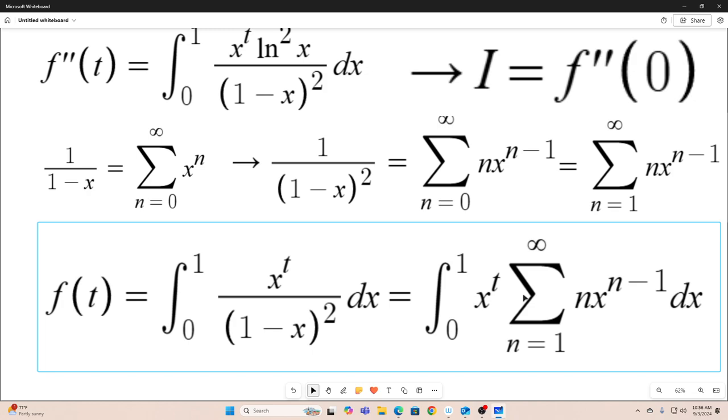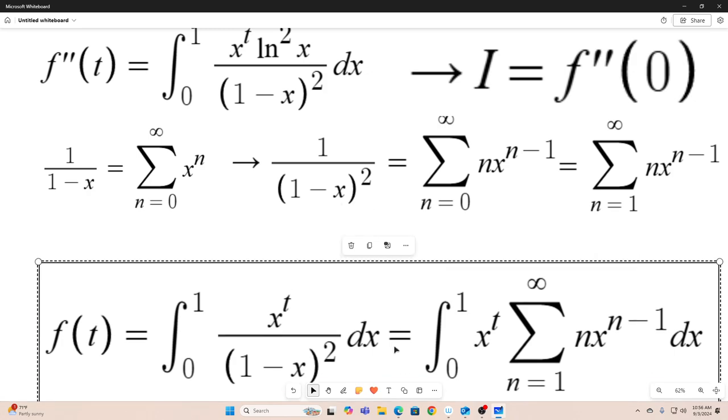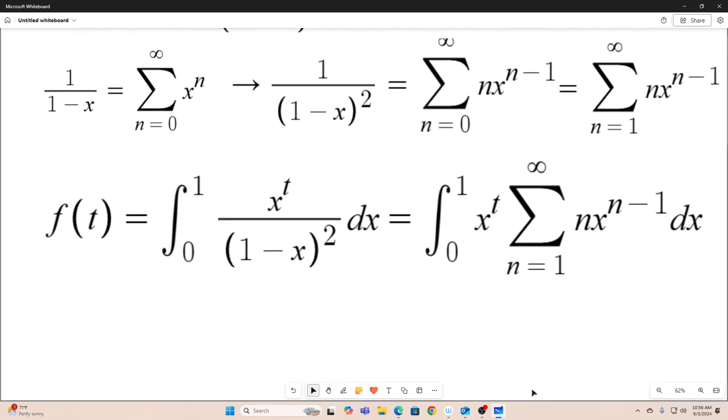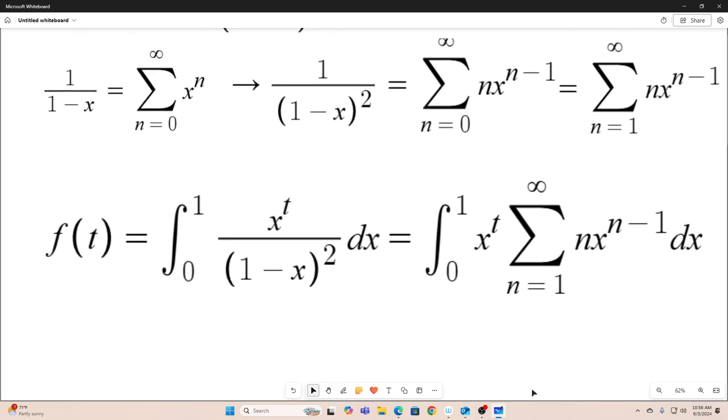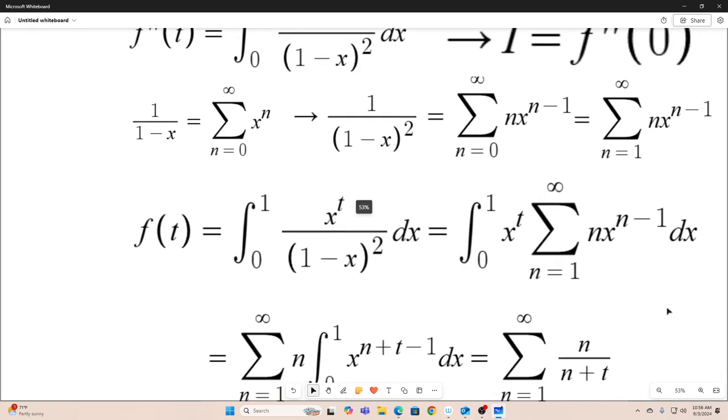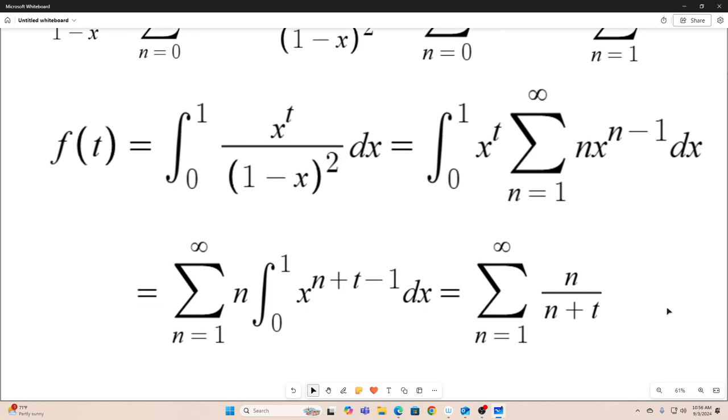That's fine. And then what we're going to do is bring this x to the t inside our sum. And all in all, f of t evaluates to this. So you can see in the next step, I switched the integral and summation notations and brought the n outside of the integral since it's independent of x. Then I evaluated the integral. And what you end up with is this.